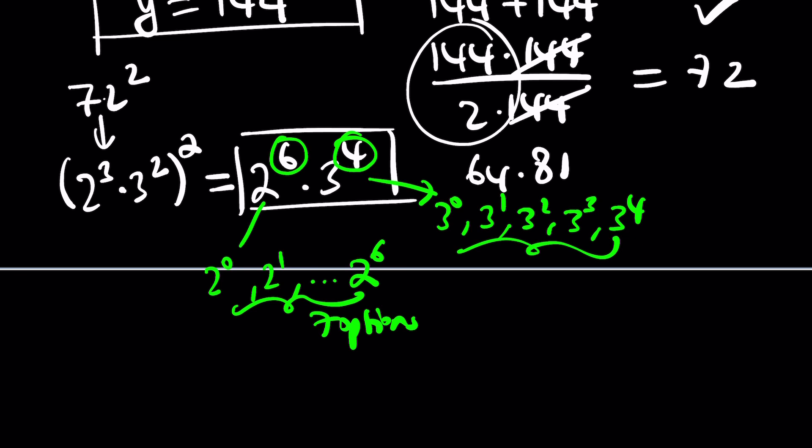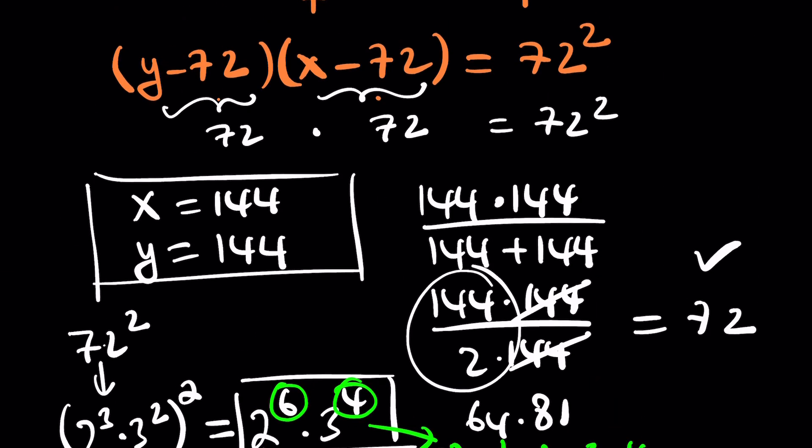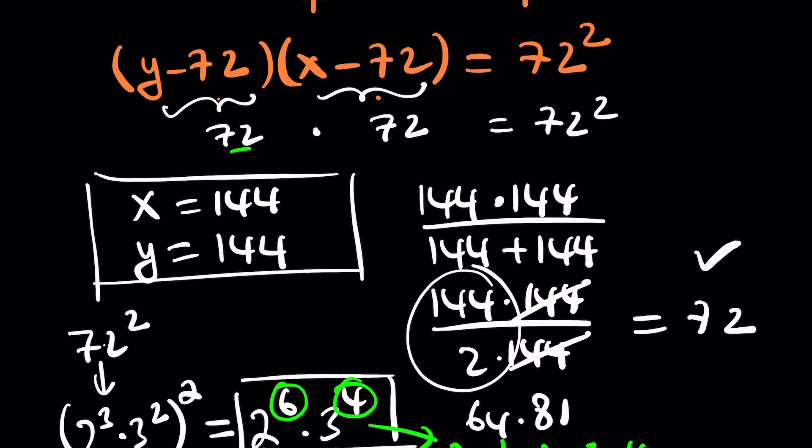And now when you put these two things together, for every choice from a power of 2, you get to choose one of these 3s. So multiplication principle tells us 7 times 5 is the option. So this number has 35 factors, which means we're going to have to look at 35 pairs. But they're going to repeat because of symmetry, so you don't have to do all of them.